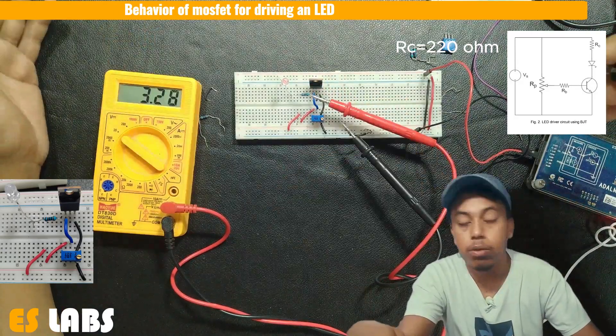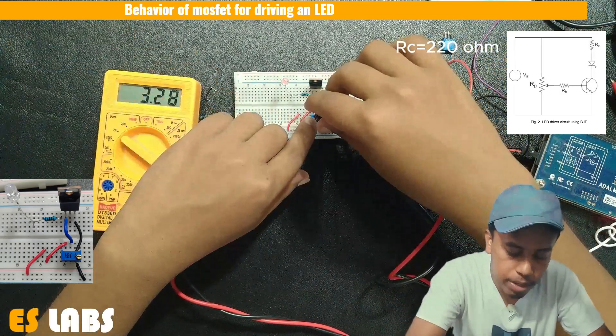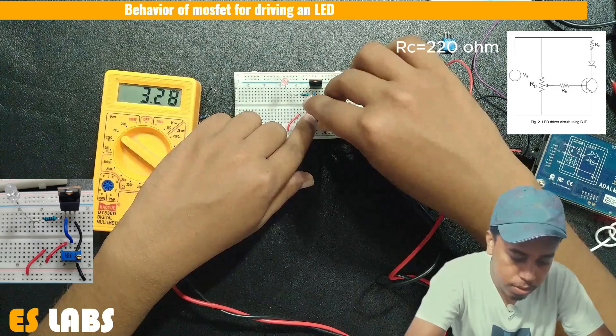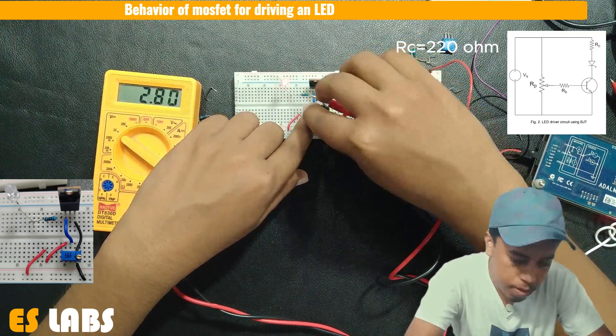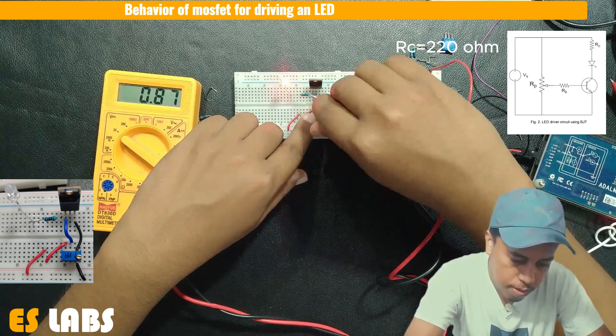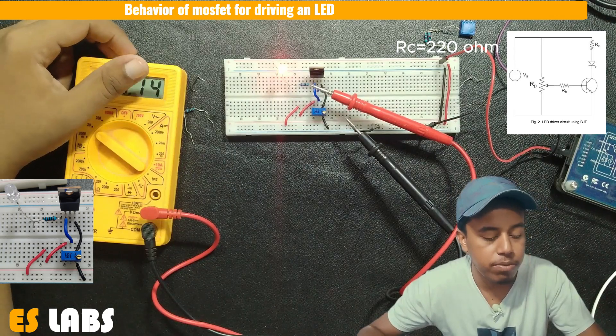So this LED is off. We measure the voltage across the drain and the source. And now we adjust this knob. Now this LED is glowing fully and we can see that voltage is equal to 0.14 volt.